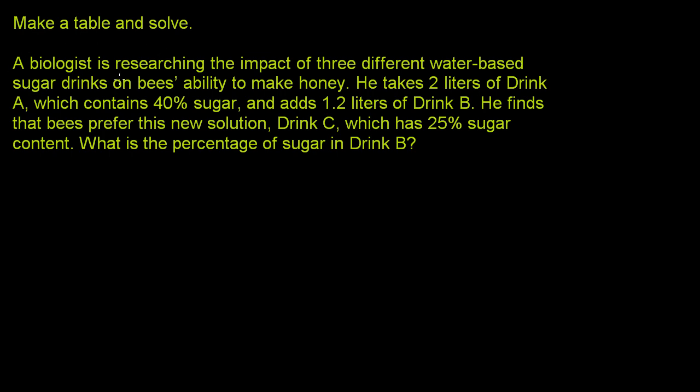Make a table and solve. A biologist is researching the impact of three different water-based sugar drinks on bees' ability to make honey. He takes two liters of Drink A, which contains 40% sugar.